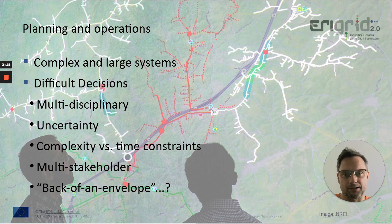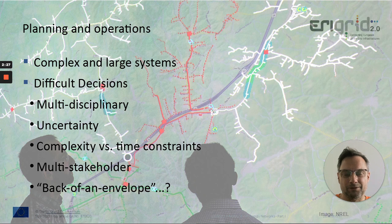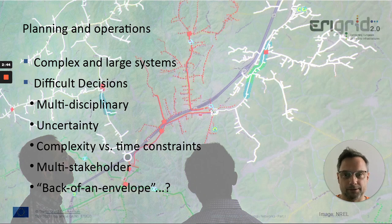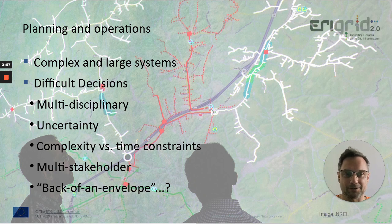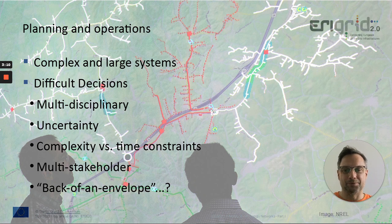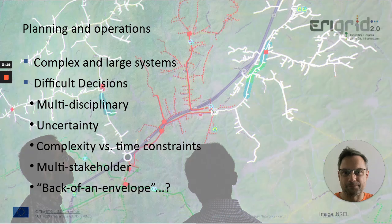If you look at the power system as it is, it's already complicated. But adding integration, digital transformation, and distributed features to it will make it even more complicated and complex. There are difficult decisions to be made. You will have to work with a multidisciplinary problem. There's lots of uncertainty in generation with wind and solar, but also on the load side with smart loads, and lots of time constraints and complexity. This multi-stakeholder situation doesn't make things easier, so designing, planning, and operating such a system is not easy anymore. You cannot do a swing equation at the back of an envelope. You need massive numerical support.